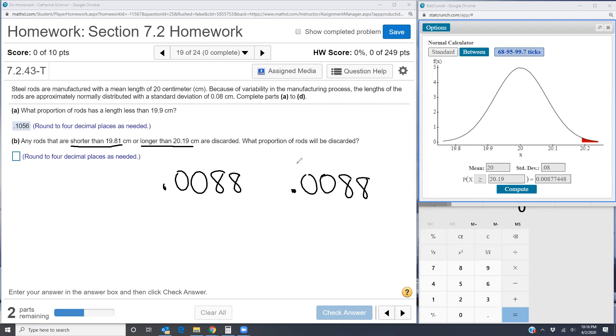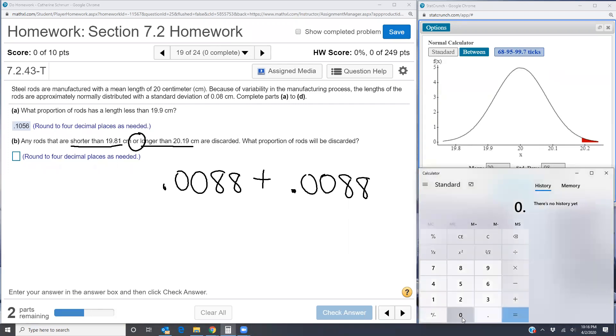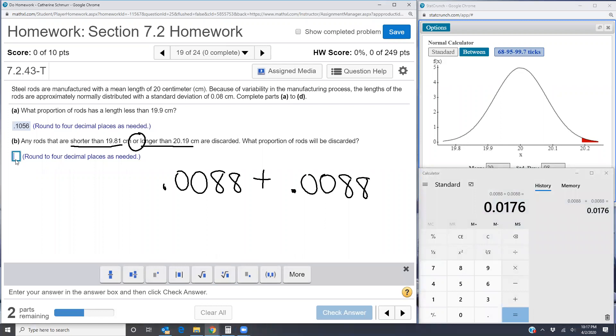Now keyword here, remember with probabilities and that's what these are, proportions are probabilities, or means that you're adding. So I'm going to add those two probabilities. Over in my calculator, I'm going to put in 0.0088 plus 0.0088. So 0.0176 should be my answer here. 0.0176. Perfect.